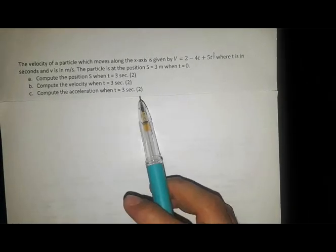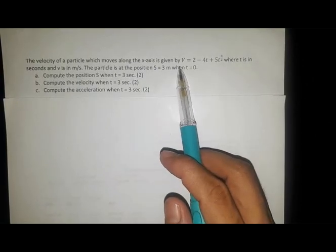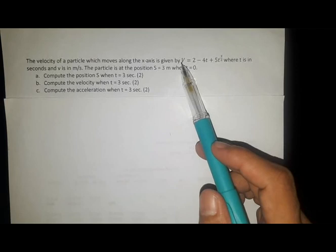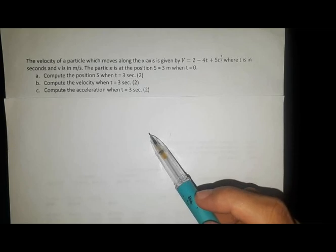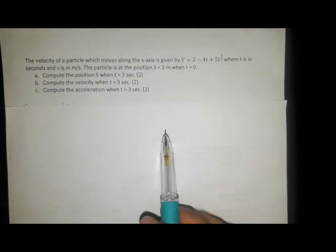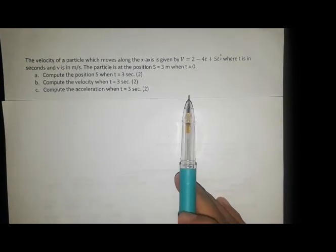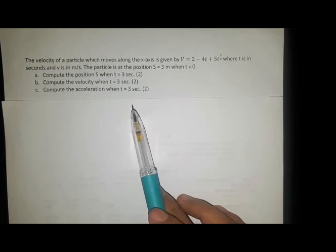The velocity of a particle moving along the x-axis is given by the equation v equals 2 minus 4t plus 5t raised to 3 halves, where t is in seconds and v is in meters per second. The particle is at position s equals 3 meters when t is equal to 0. Compute the position s when t is equal to 3 seconds.